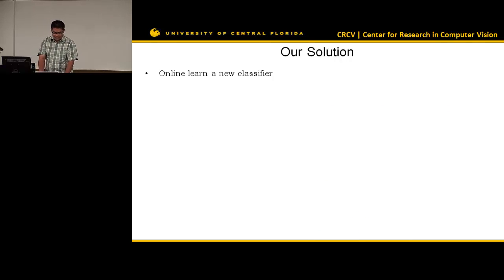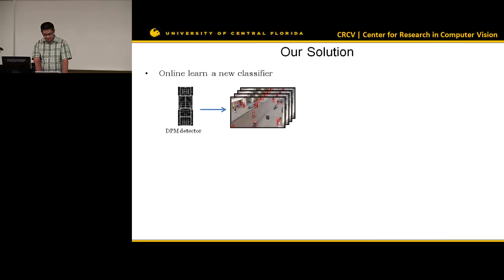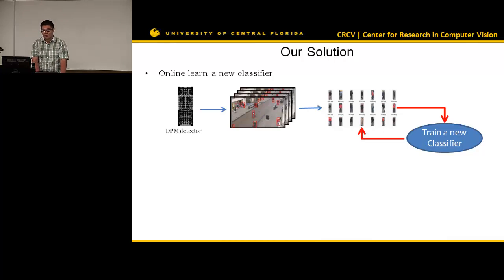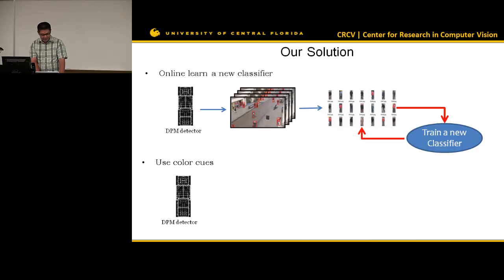The first thing is that we train a new classifier. We apply the DPM detector with a pre-trained model to a new video and get some initial detections. With these detections, we train a new classifier using different features. With this new classifier, we classify and rescore those detections, then train a second classifier iteratively to improve detection. We use color cues instead of gradient features when training this new classifier, because in a video the pose changes quickly but the color of a person does not change much.